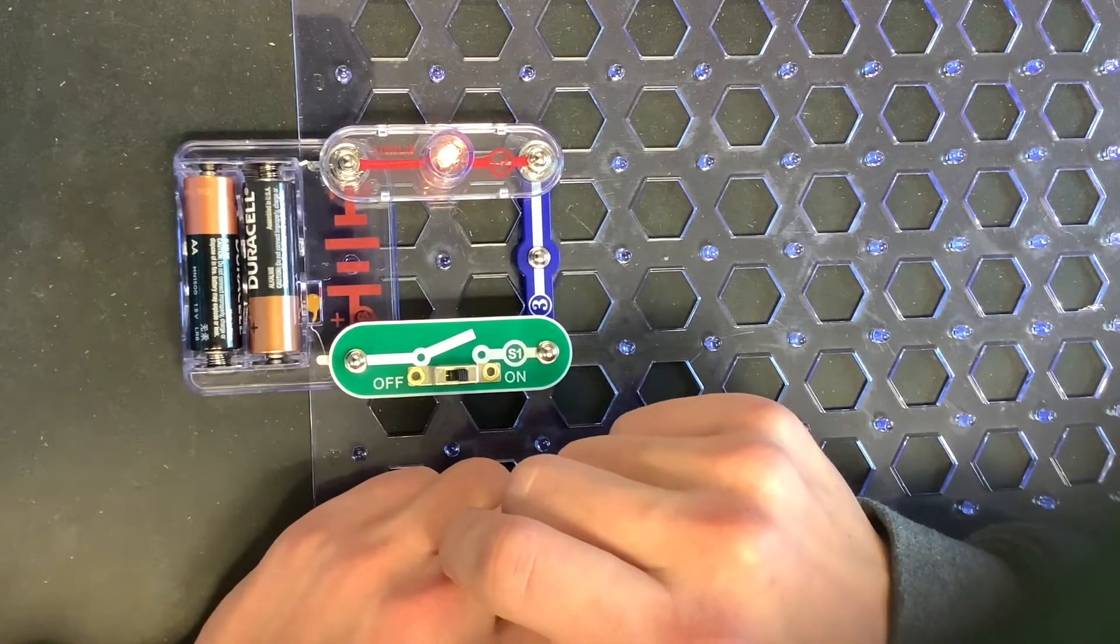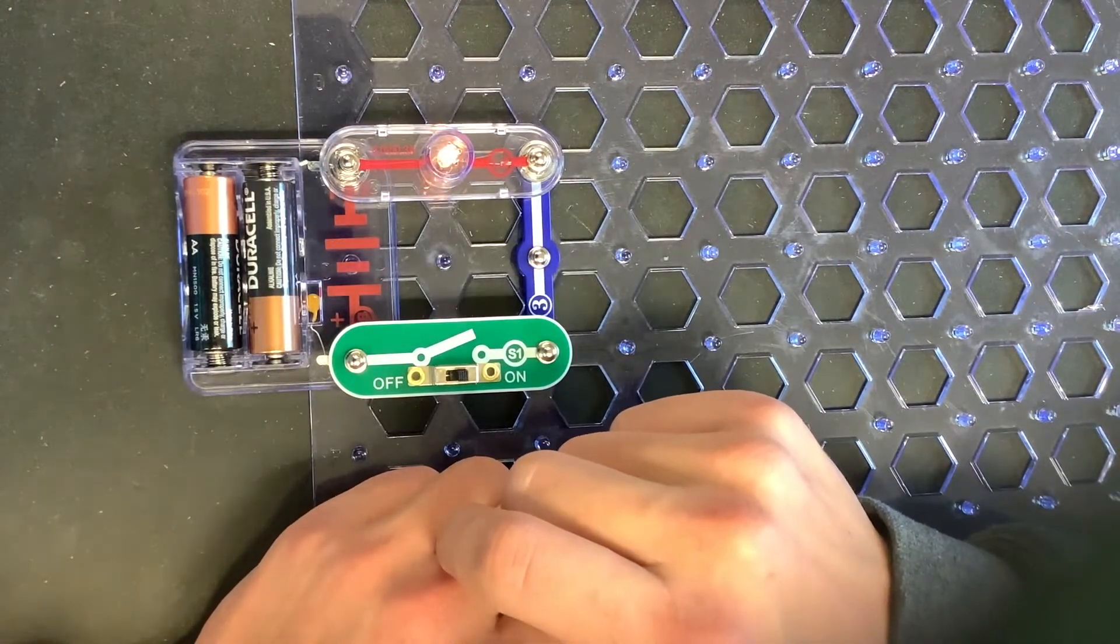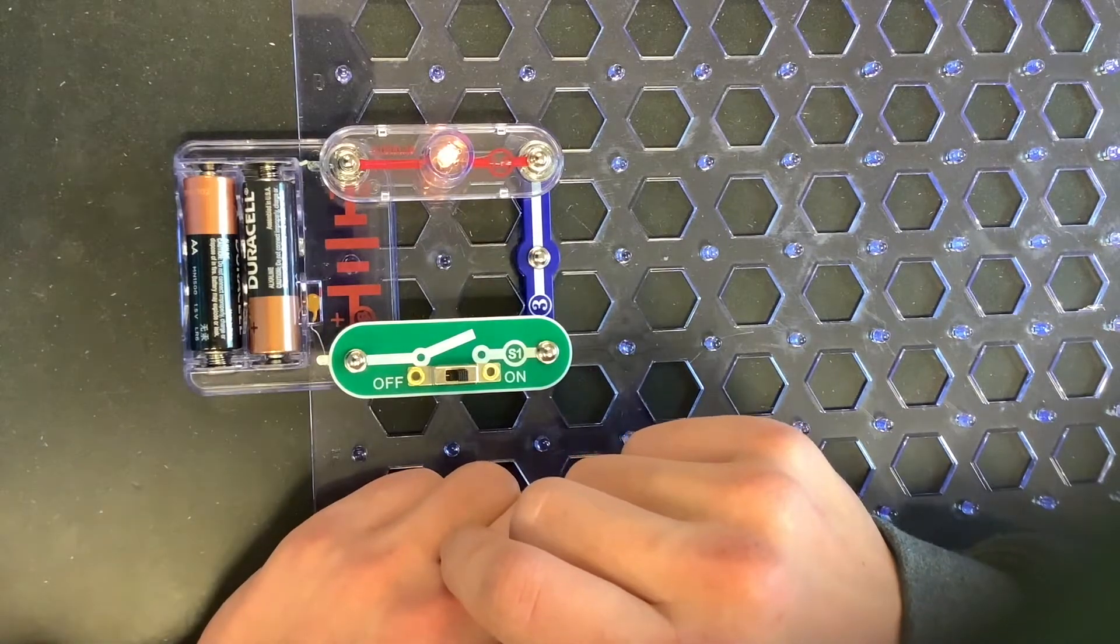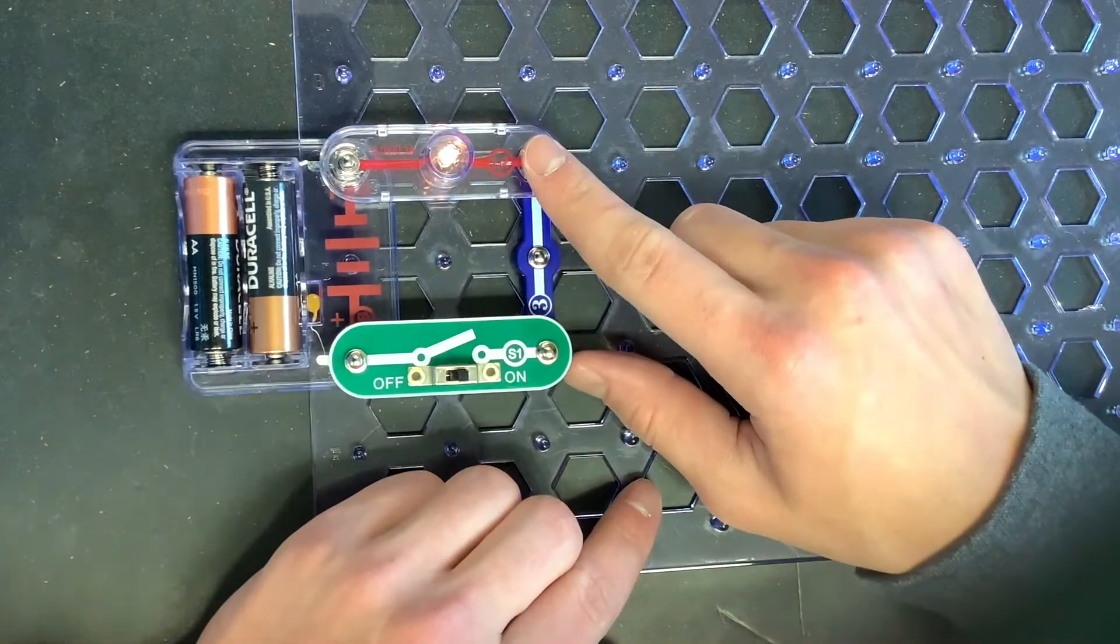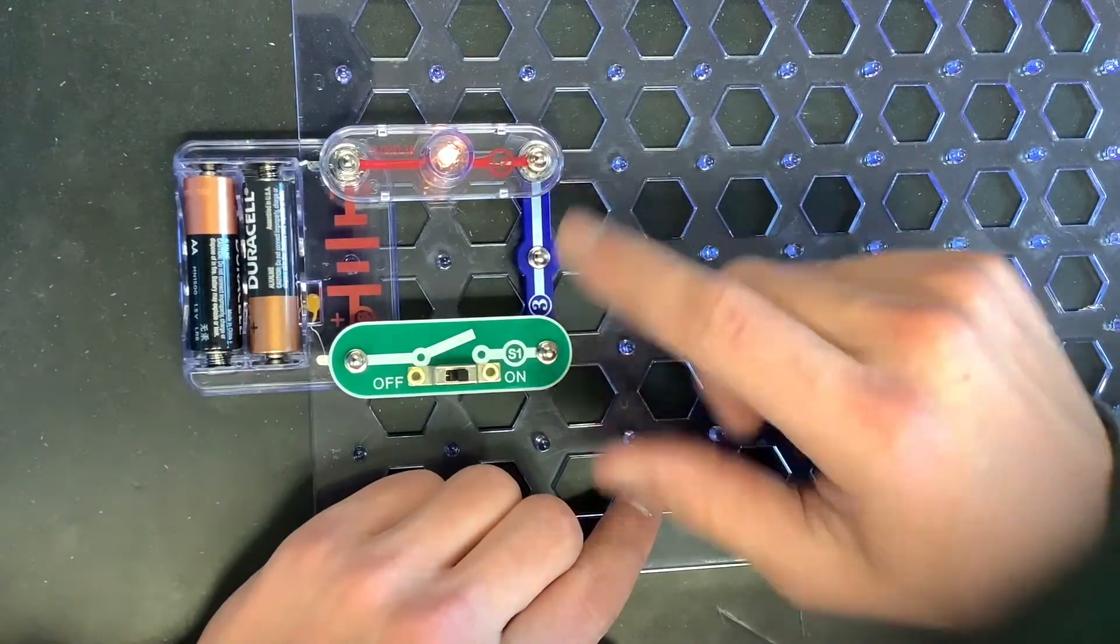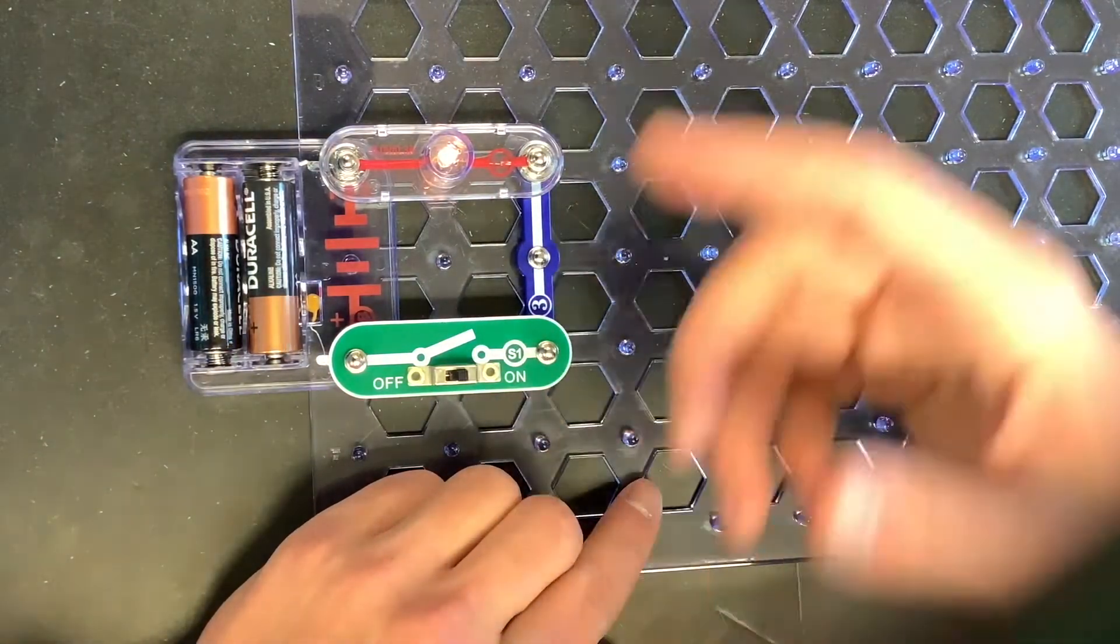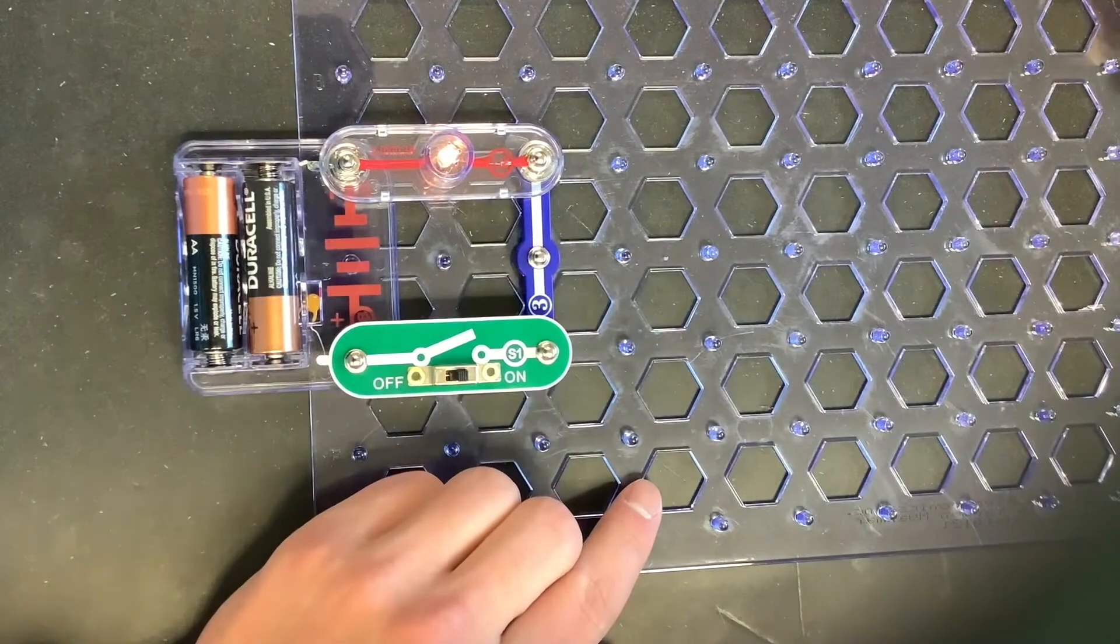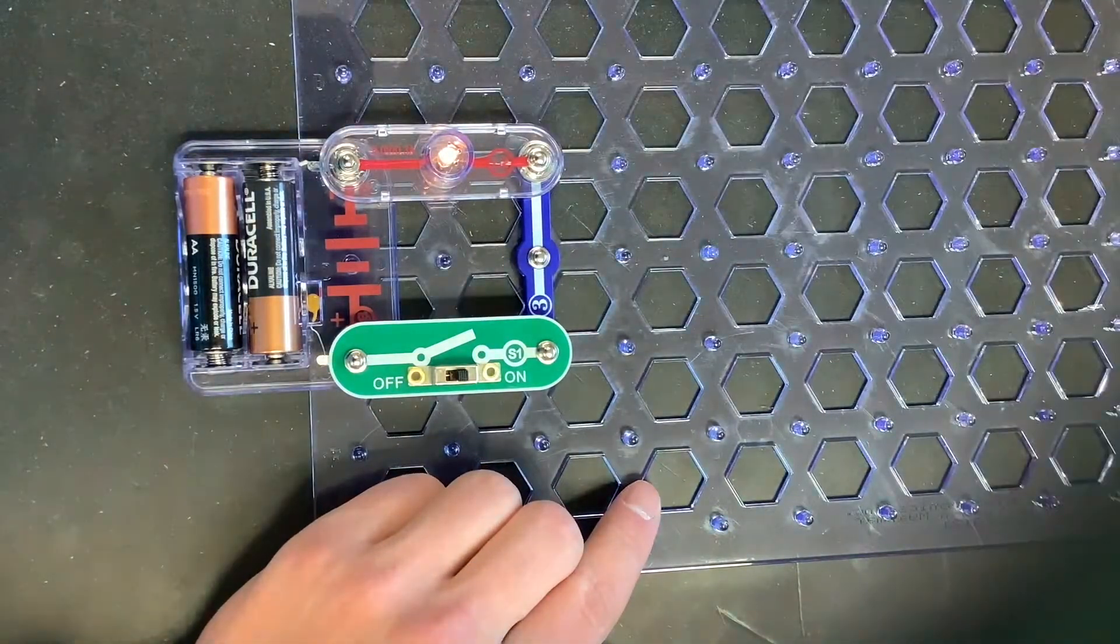And if you notice, the light is considerably dimmer than with a three-volt lamp. That's just because this lamp has a higher rated voltage,